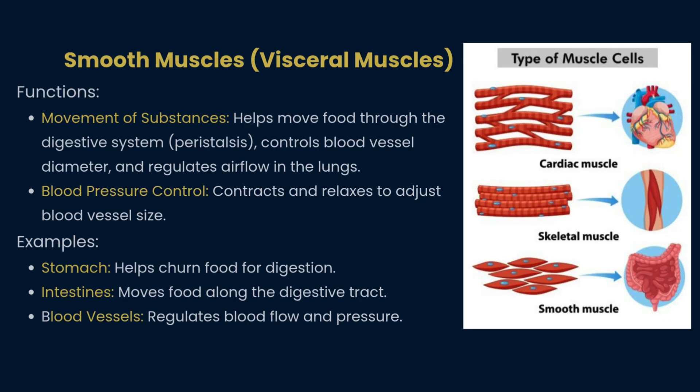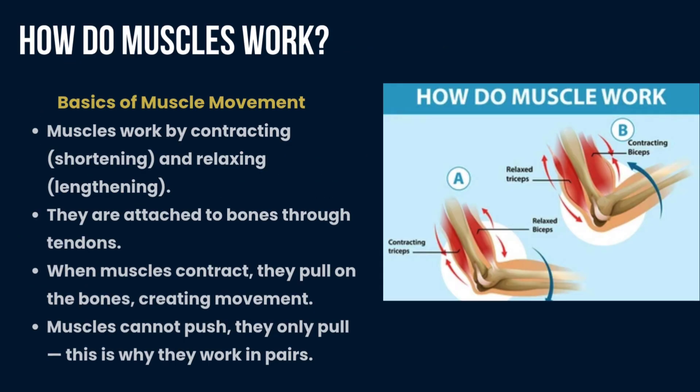Smooth muscle helps food move through the digestive system via peristalsis, controls blood vessel diameter, and regulates airflow in the lungs. It contracts and relaxes to adjust blood vessel size. Examples include the stomach, which churns food for digestion; the intestines, which move food along the tract; and blood vessels, which regulate blood flow and pressure.